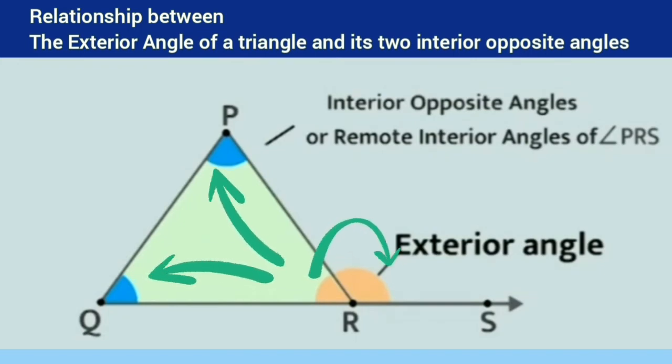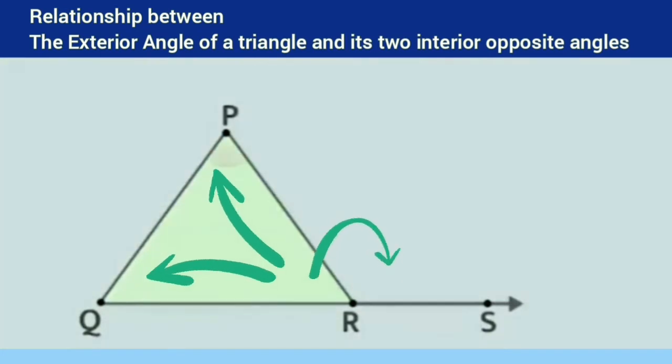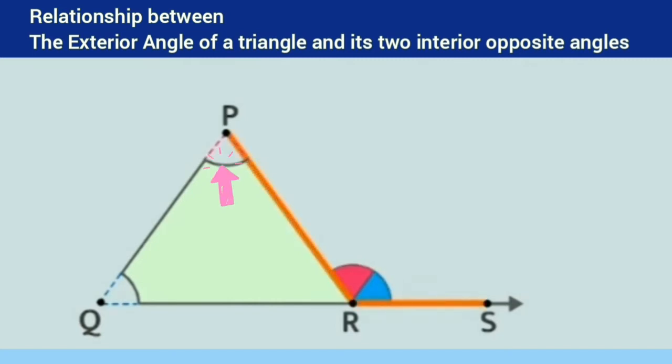Let's understand this relationship in the case of triangle PQR and its exterior angle PRS. Take a cutout or a trace of angle PQR and angle RQP and place them adjacent to each other at angle PRS. As you can see here, angle RPQ and angle PQR are entirely covered with angle PRS.